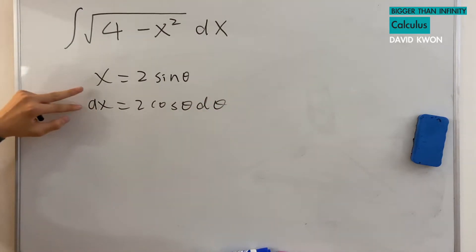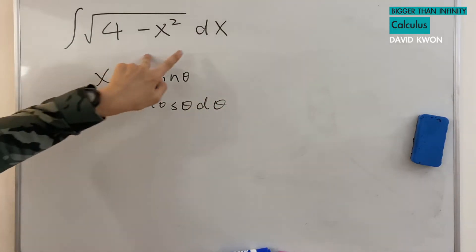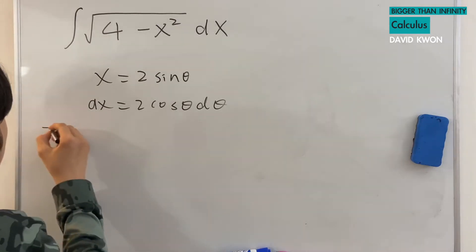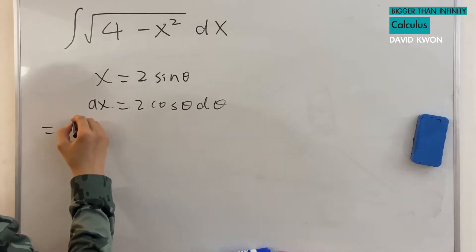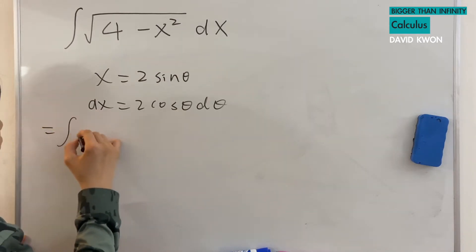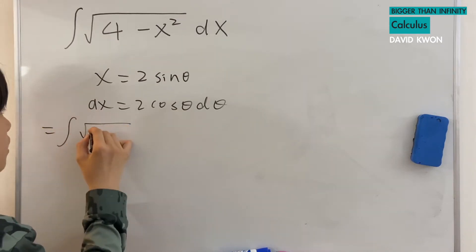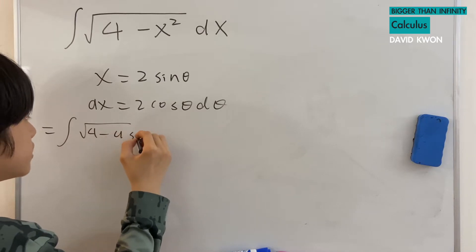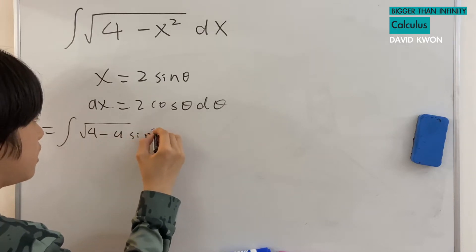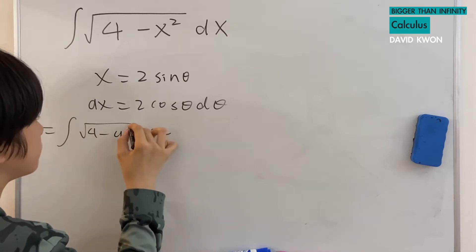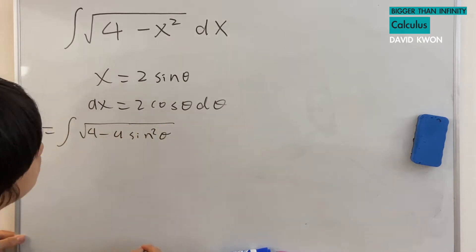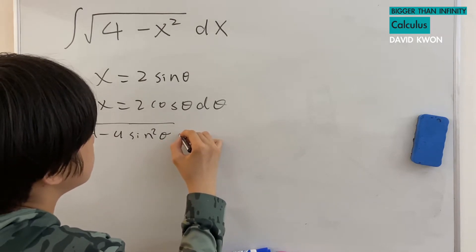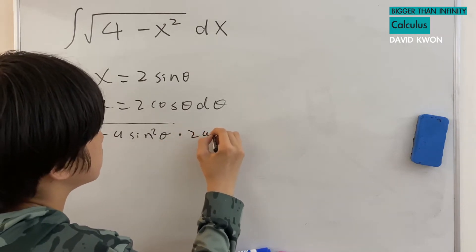So now with those two things we know, let's put them in there. If we do so, we would get the integral of 4 minus 4 times sin squared theta times 2 cos theta.